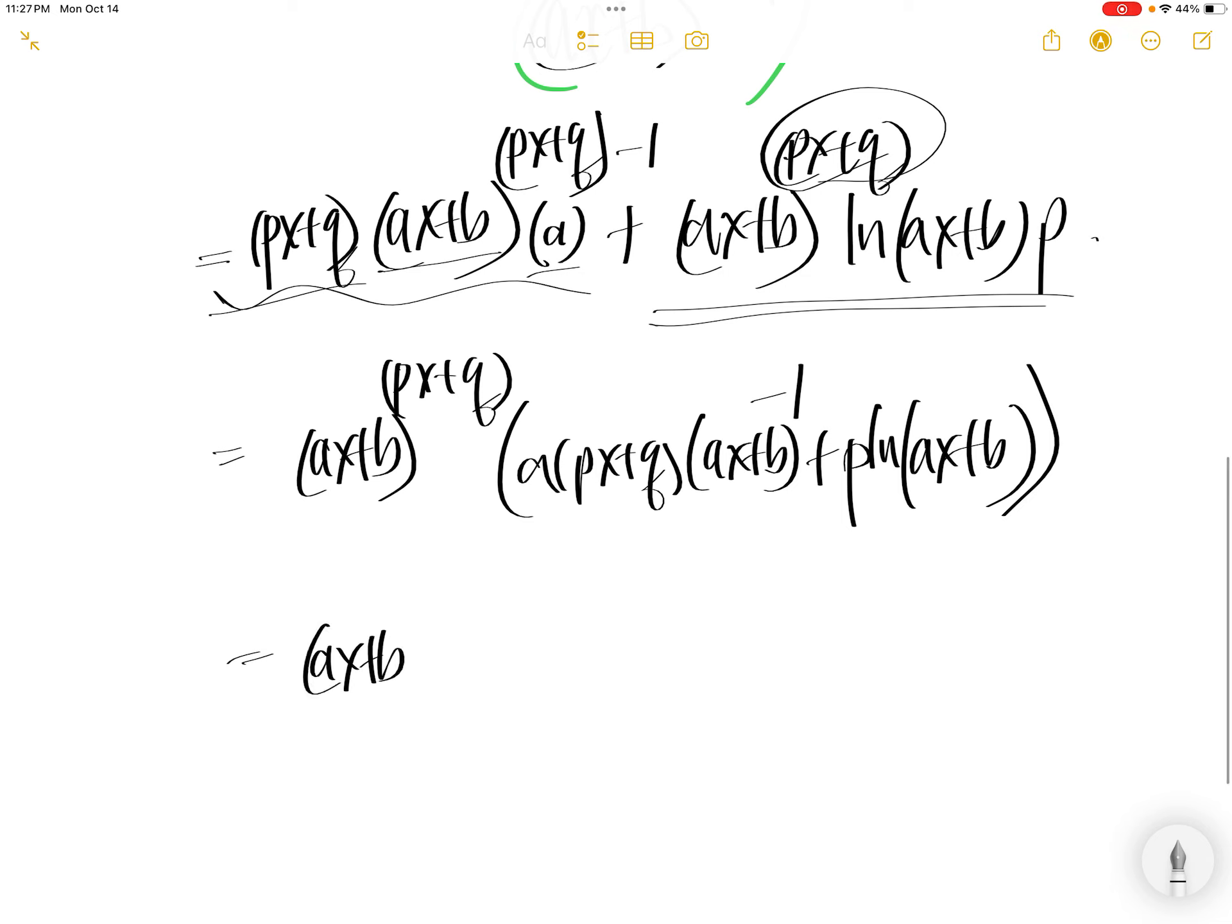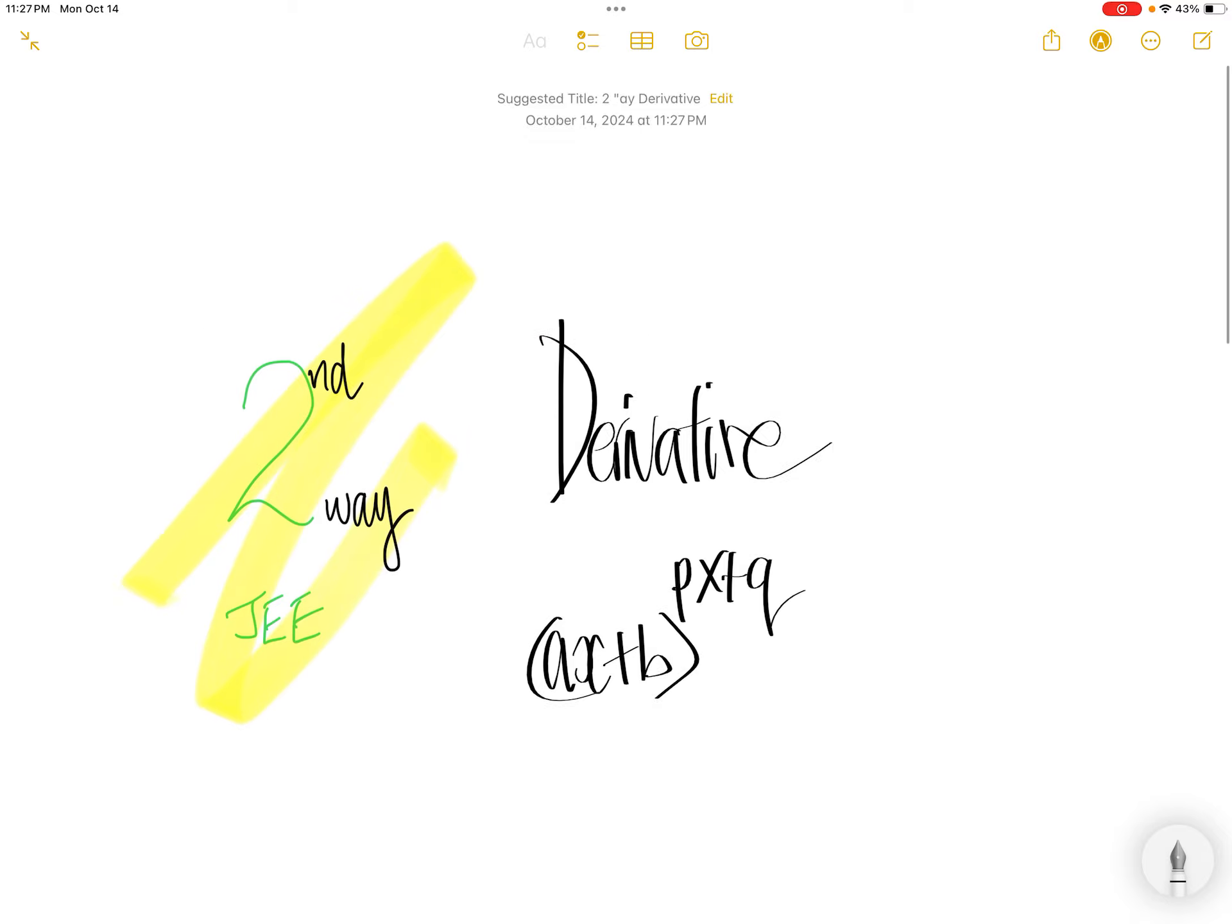Now you have AX plus B to the power of PX plus Q, and then you have A, PX plus Q, divided by AX plus B, plus P LN of AX plus B. Done!